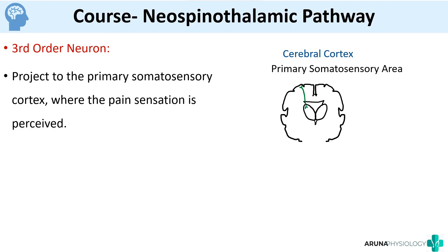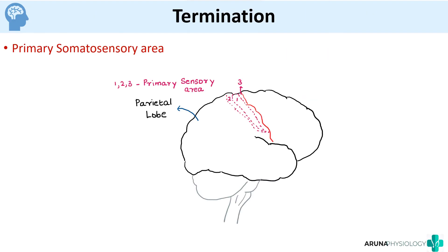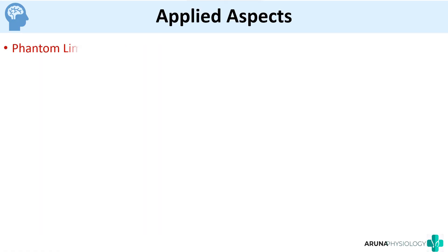The termination of both pathways is the primary somatosensory area of the cortex. That completes the origin, course, and termination of the pain pathway — the lateral spinothalamic pathway. For applied aspects, you can also read about phantom limb and pain modulation, which is another important topic that will be dealt with later.